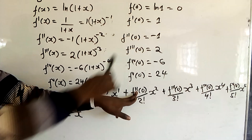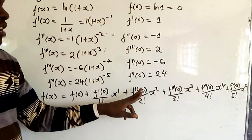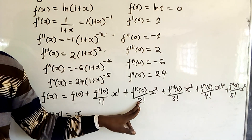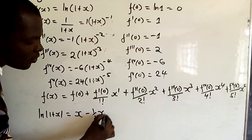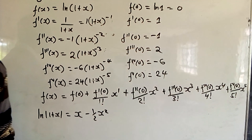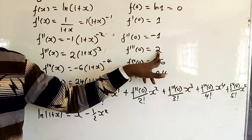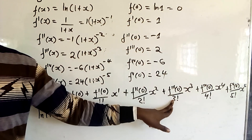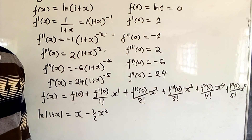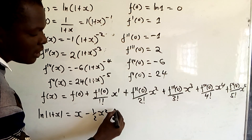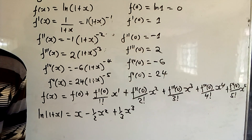f''(0) = -1, so -1 over 2 factorial gives -1/2, meaning we have -½x². For f'''(0) = 2: 2 over 3 factorial is 2/6 = 1/3, so we have plus (1/3)x³.